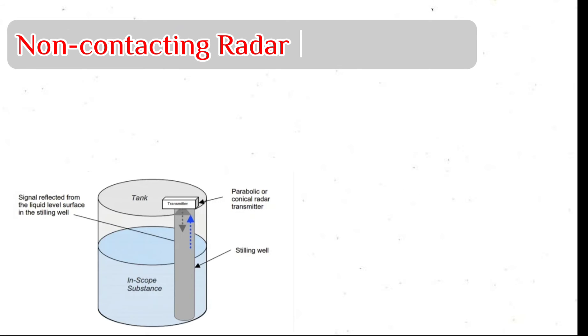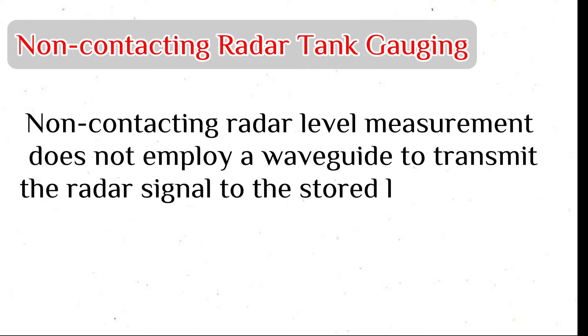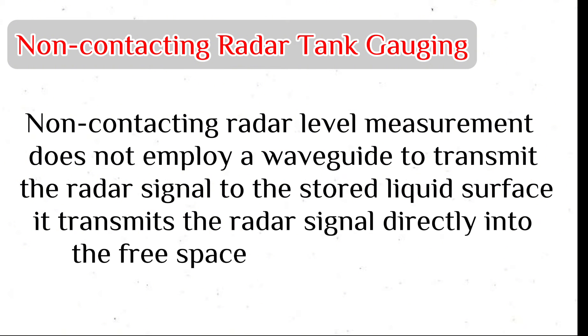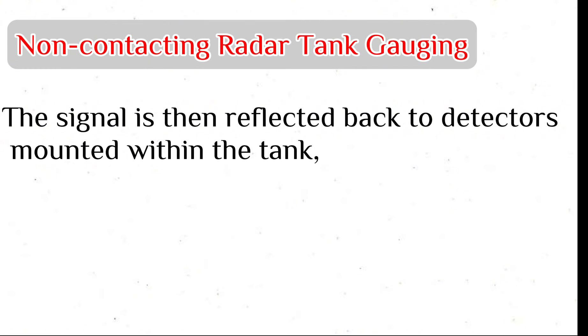Non-contacting radar tank gauging. Non-contacting radar level measurement does not employ a waveguide to transmit the radar signal to the stored liquid surface. It transmits the radar signal directly into the free space of the storage tank. The signal is then reflected back to detectors mounted within the tank, out of reach of the stored material.